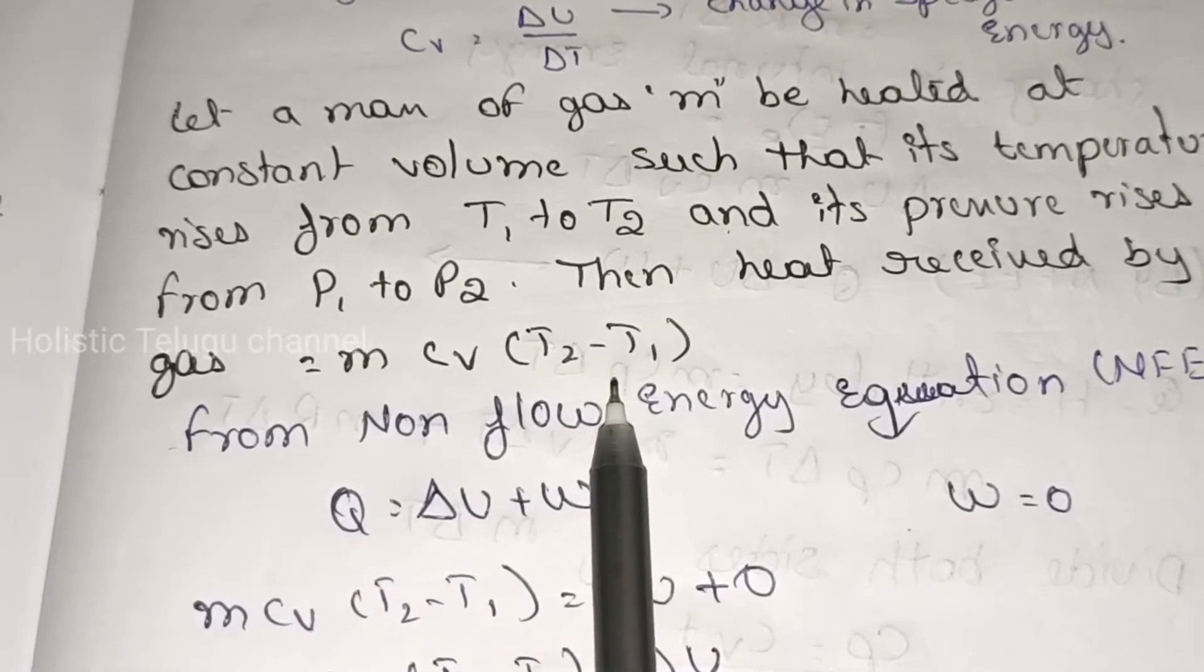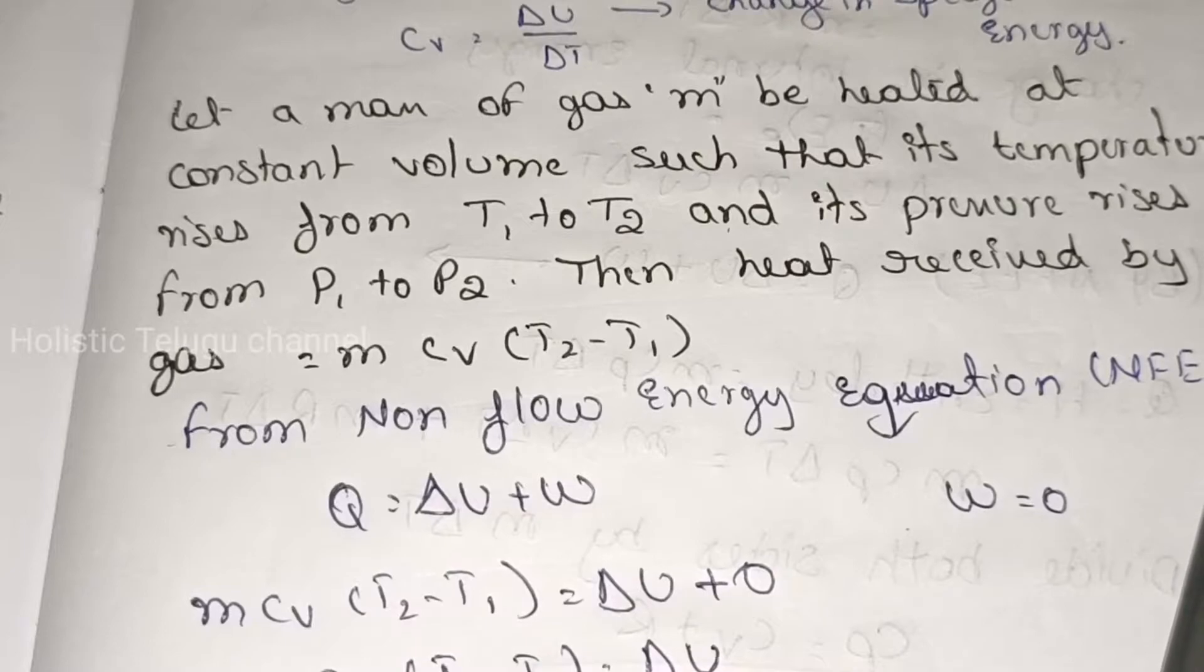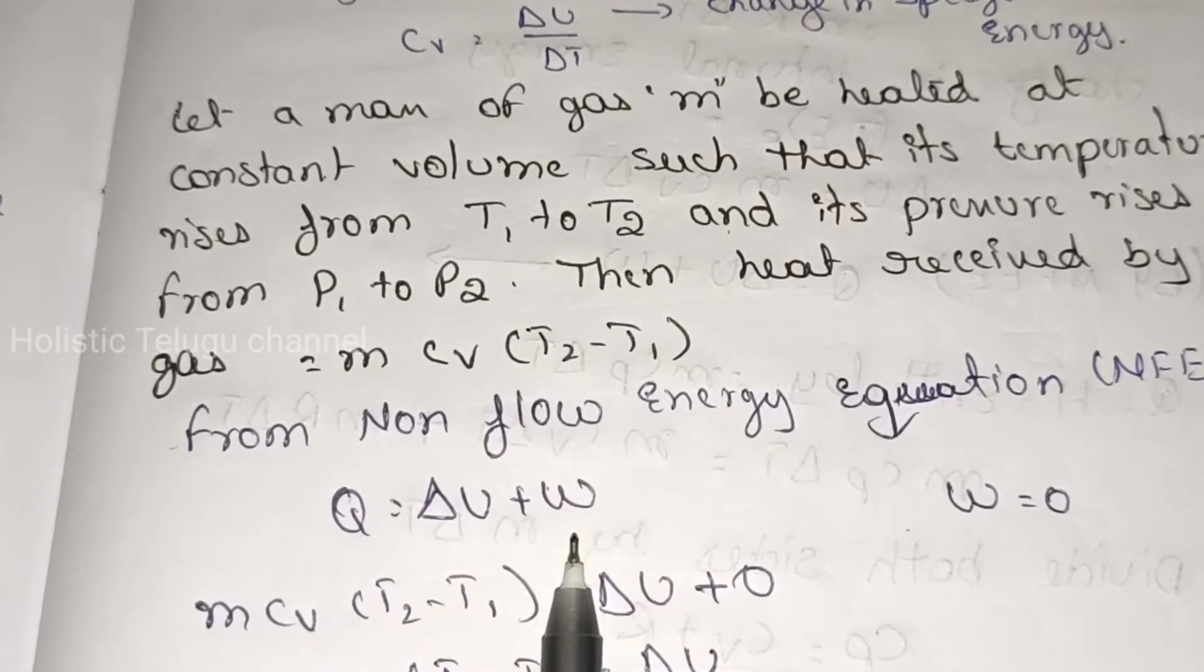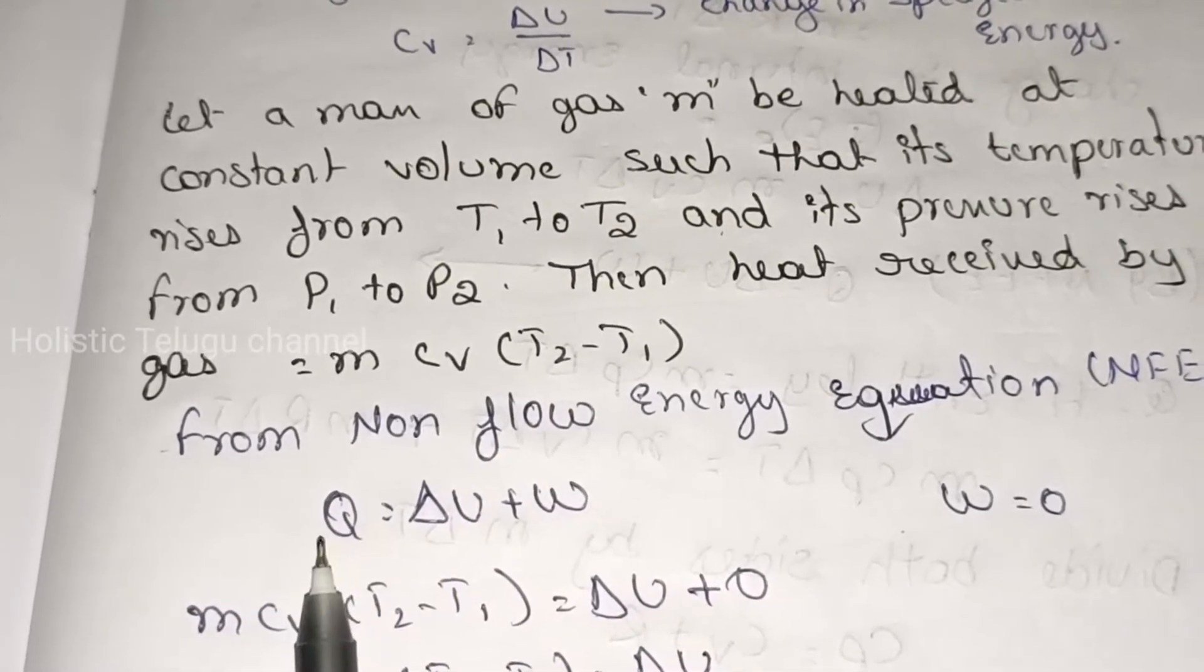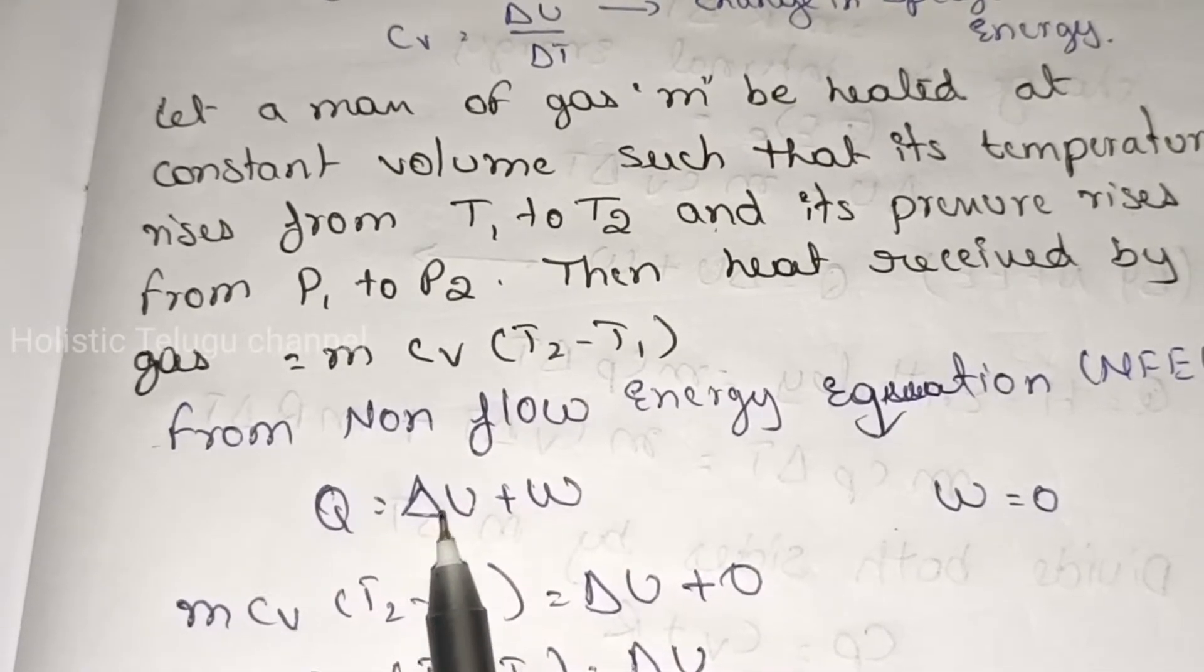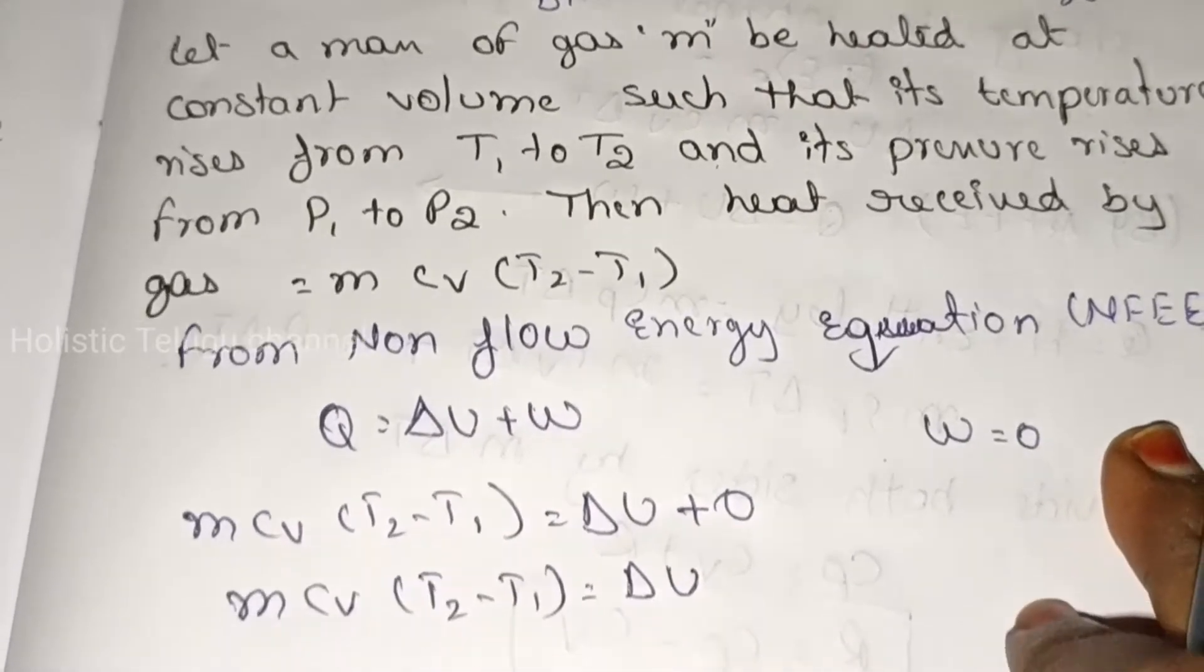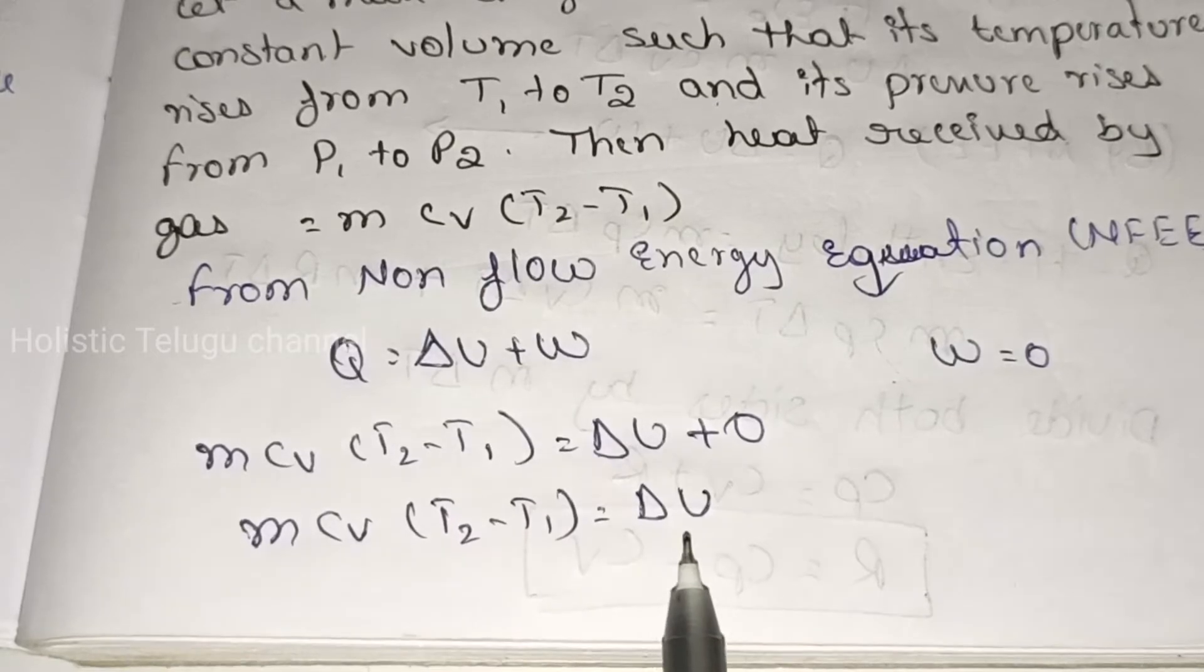Heat received is m Cv (T2 minus T1). From non-flow energy equation NFEE, that equation Q equal to delta U plus W. So m Cv (T2 minus T1) equal to delta U.